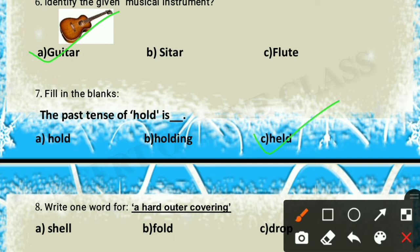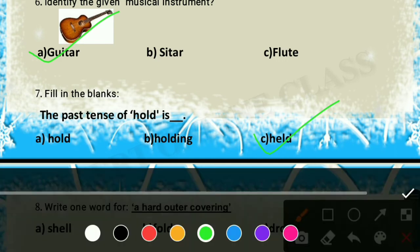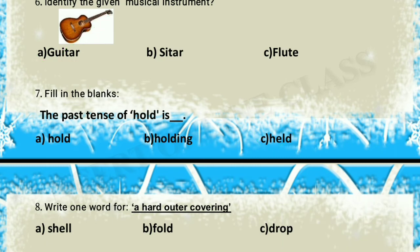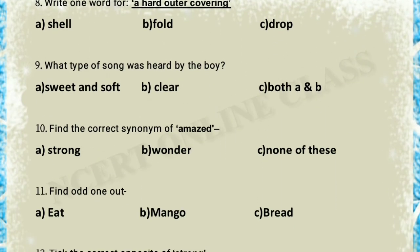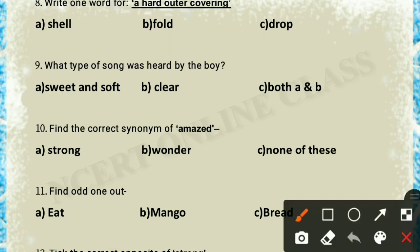Question 8: write one word for a hard outer covering. The answer is 'shell' — the hard outer covering. Options are fold or drop, but option A — shell — is the correct answer.